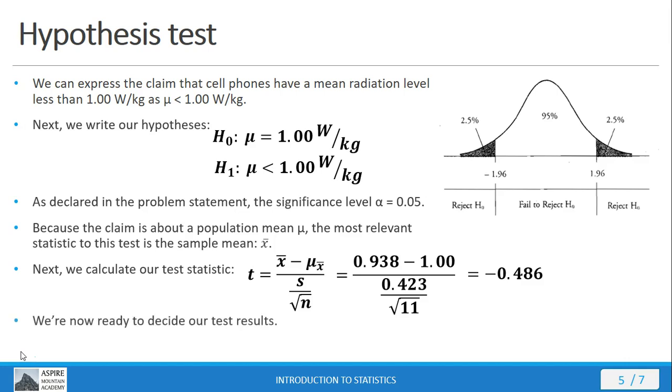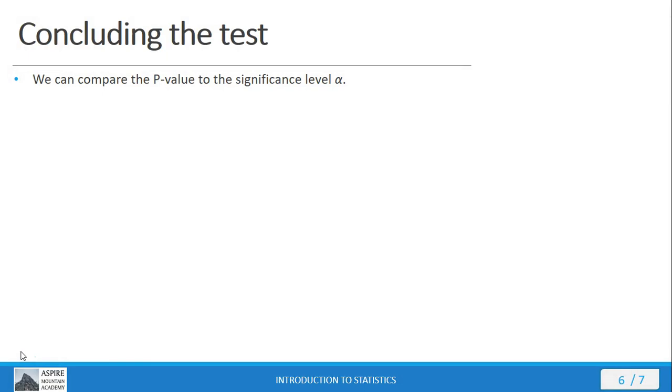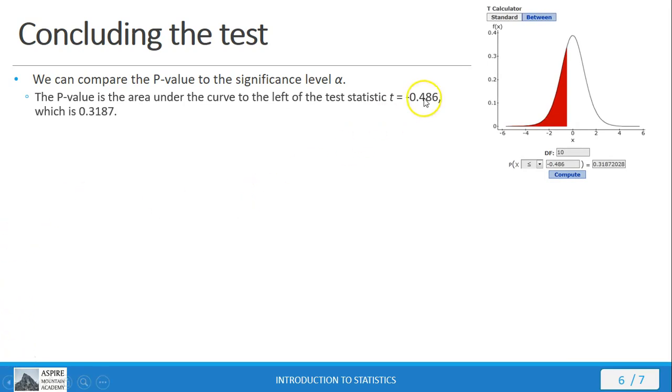Now we're ready to decide our test results. We can compare the p-value with the significance level of alpha. We don't really have the p-value though. All we have is the test statistic, but we can get the p-value. Here we've got our test statistic of negative 0.486. In the t-calculator in StatCrunch—because remember, we don't know what the population standard deviation is, therefore we're using the student t-distribution—notice how we have 10 degrees of freedom. That's one less than the sample size of 11. I put my test statistic in here, and I have a left-tailed test. The p-value is 0.3187.